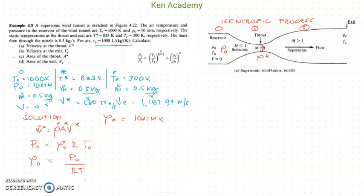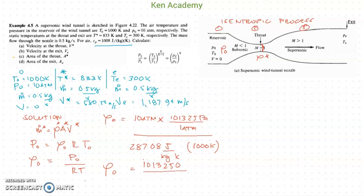Substituting known values and converting the given pressure at the reservoir into a more appropriate unit, I'm going to multiply it by its conversion factor. Continuing with my process, I get the pressure converted to an appropriate unit divided by 287.08 as my gas constant and multiplied by 1000 Kelvin, which is my temperature at the reservoir.